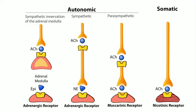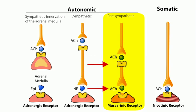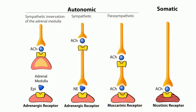Recall from the parasympathetic system: a very long preganglionic neuron ends at the ganglion close to the effector organ; acetylcholine stimulates the nicotinic receptor at the ganglion, then stimulates the muscarinic receptor on the effector organ. In the sympathetic nervous system this changes considerably. The preganglionic neuron is very short, the ganglion is near the spinal cord, and the postganglionic fibers are very long and branch multiple times, innervating more than one organ system.